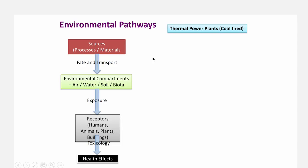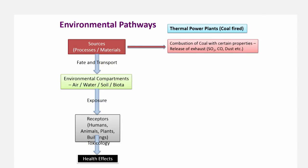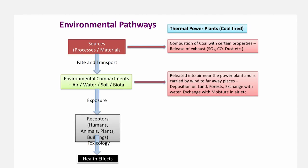For example, thermal power plants that are coal-fired: the combustion of coal results in the emission of certain exhaust gases and particulate matter. These are released into air and dispersed and transported. Different processes happen — one of them is deposition, the exchange with land as well as water. This is well known; people have measured the rate at which materials can transfer from air into a phase such as water or land. We also see that there is an effect on vegetation.